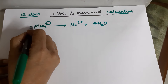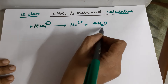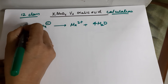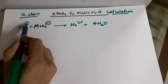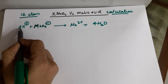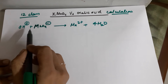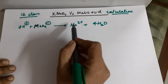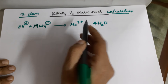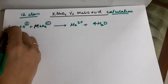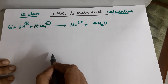Hydrogens are balanced by H⁺ since you are using an acidic medium. There are 8 hydrogens, so 8H⁺. Coming to the charge part: 8H⁺ means 8 positives and 1 negative, making it 7 positive on this side. While on this side you only have 2 positive. To balance it out, I add 5 electrons here, so I have 2 positive on both sides.